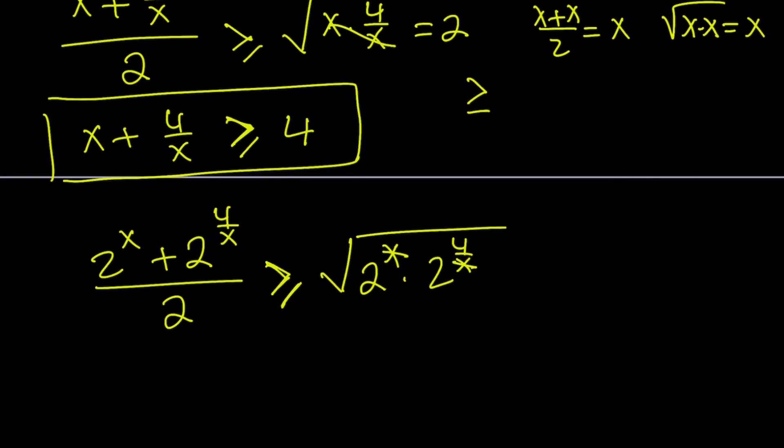Wait, that doesn't cancel out. What am I talking about? I'm kind of confusing myself here. The exponents are supposed to be added. So this is going to turn into the square root of 2 to the power x plus 4 over x.